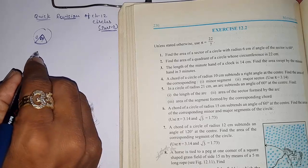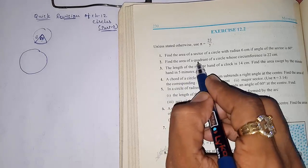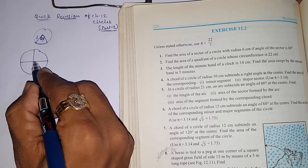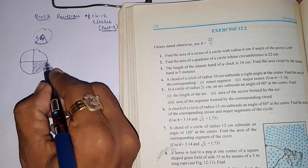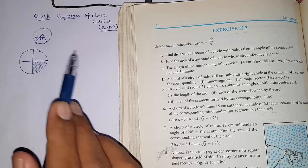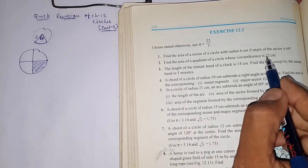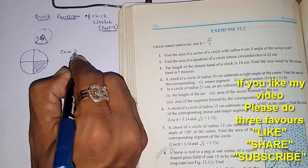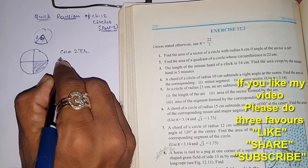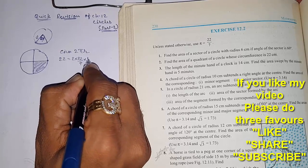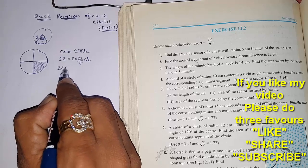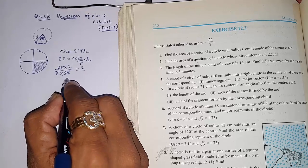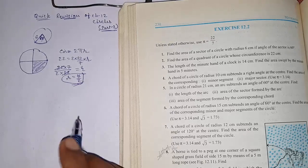Question 2: Find the area of a quadrant of a circle whose circumference is 22. A quadrant is one-fourth part of a circle. Since radius isn't given, use the circumference formula: 2πr = 22, so 2 × (22/7) × r = 22, giving r = 7/2.